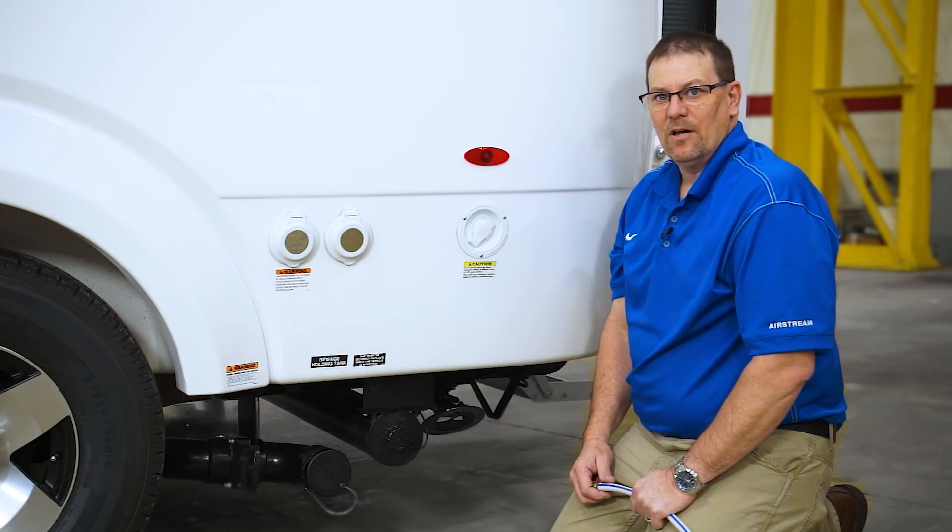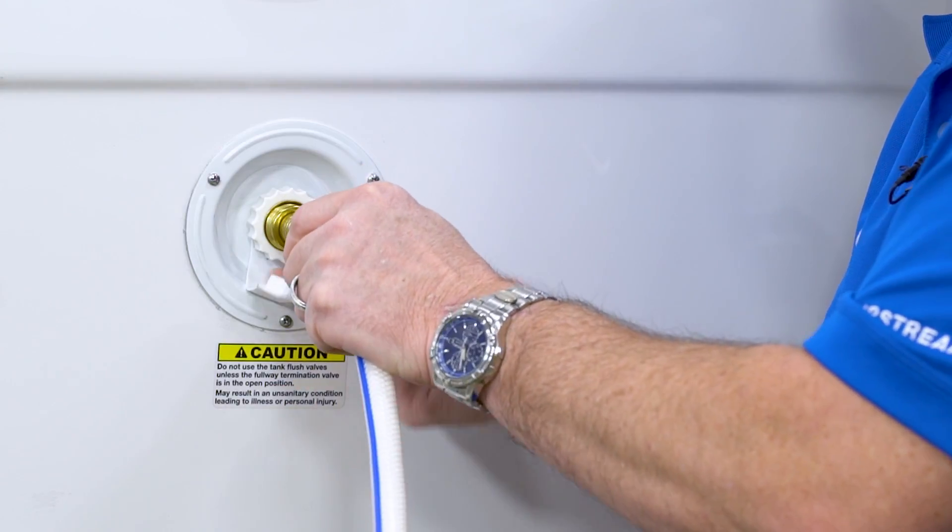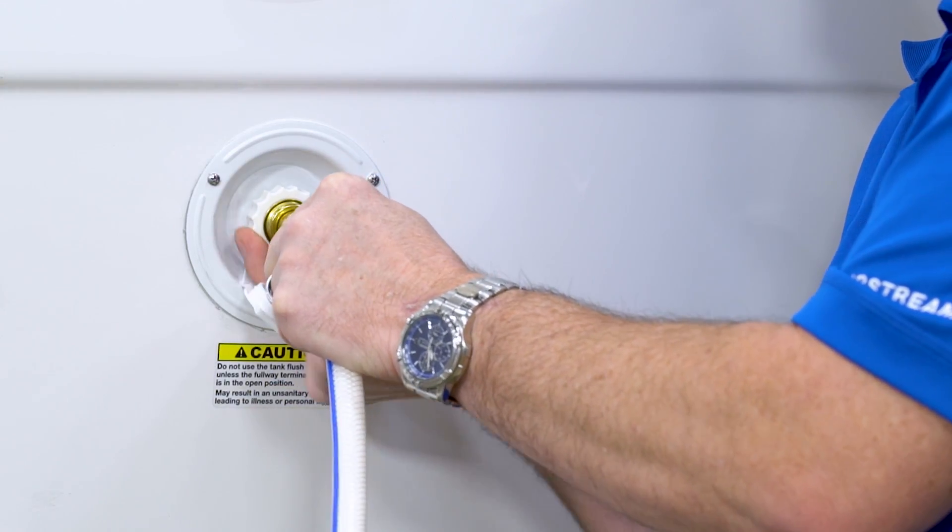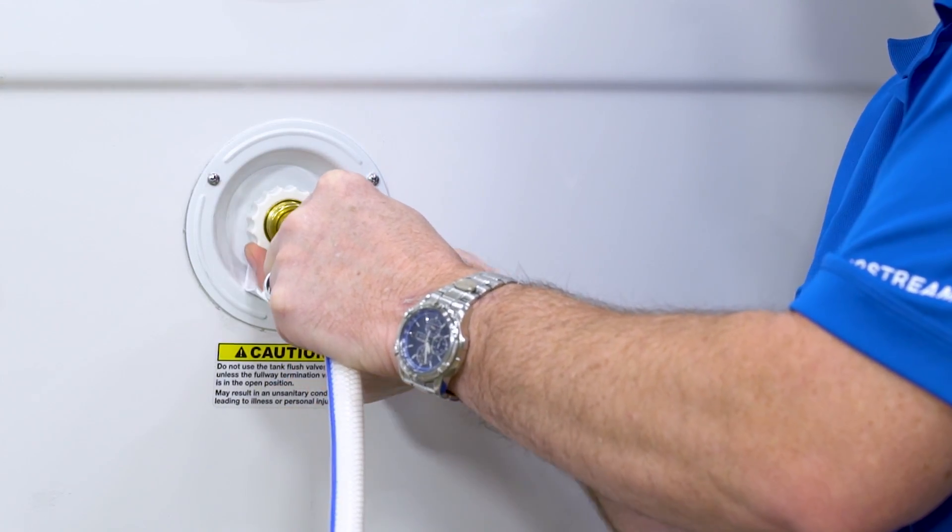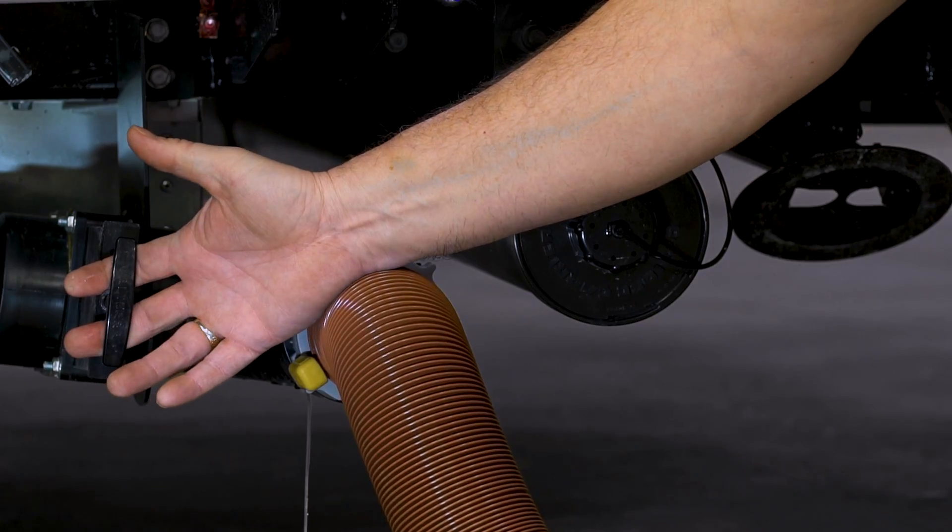The Nest has a black tank flush. To use that, we want to pull off the cap, insert our hose, and then lock it in place. Once we get it in place, we want to have the valve open to flush the tank out.